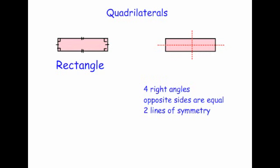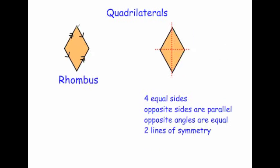A rhombus, like a square, has four equal sides, but the angles aren't all the same. The opposite angles are equal — the angle on the right-hand side will be the same as the angle on the left-hand side, and the angle on the top will be the same as the angle on the bottom. The opposite sides are parallel to each other, and it has two lines of symmetry: a vertical and a horizontal. So a rhombus has four equal sides and the opposite angles are equal.